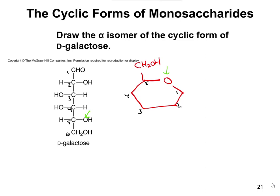Next, draw all the H's and OH's. Starting with carbon 2: the OH is on the right in the linear structure, which means it goes down in the ring, and the H goes up. You can remember that right goes down and left goes up, or think about rotating the molecule 90 degrees clockwise. On carbon 3, the OH is on the left, so it goes up and H goes down. On carbon 4, the OH goes up and H goes down. On carbon 5, we skip it since that OH is the one in the ring, and carbon 6 is just the CH2OH up top.